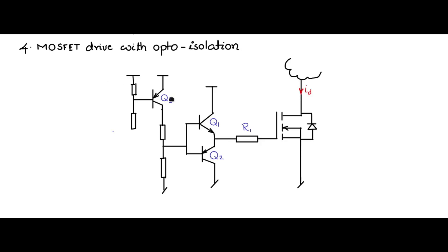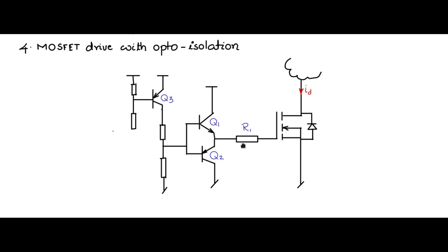We saw the BJT-based gate drive circuit where the MOSFET is driven by Q1 and Q2 totem pole BJTs, which is driven by Q3, and Q3 was driven by an NPN stage. Now this NPN stage I will replace with the NPN BJT of an optocoupler, where this transistor is being driven by the light emitted from a photodiode.